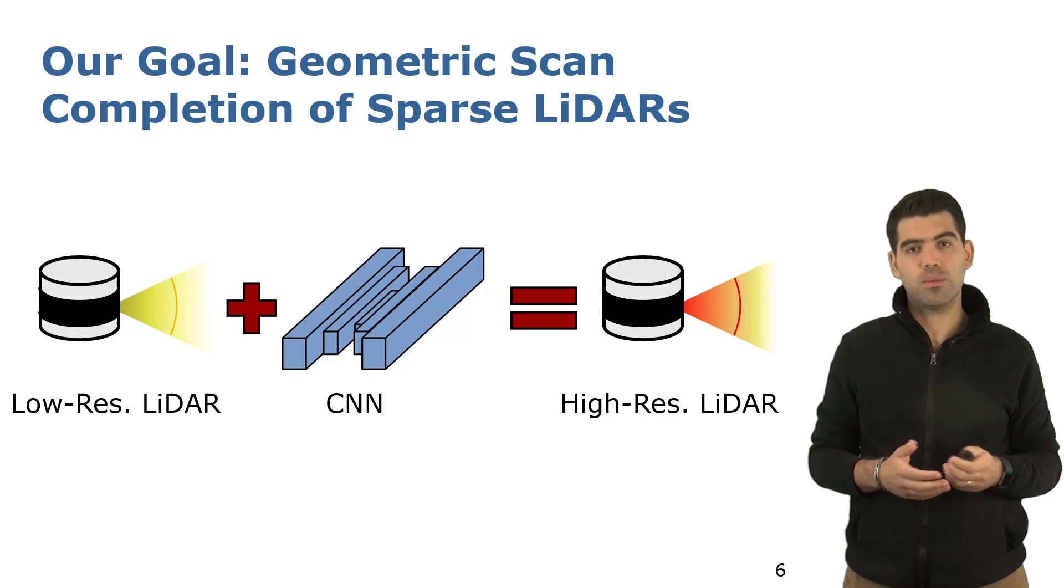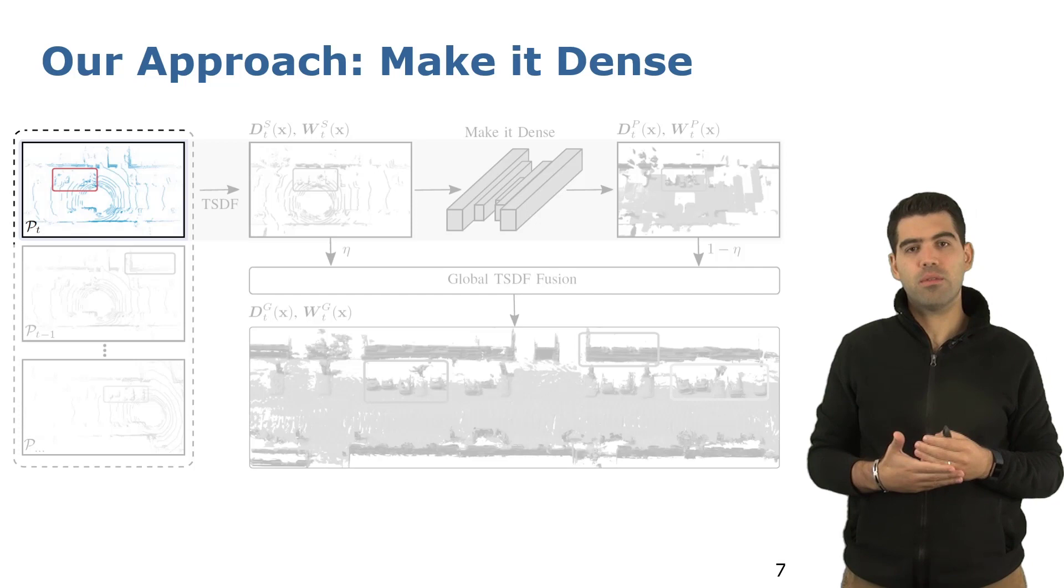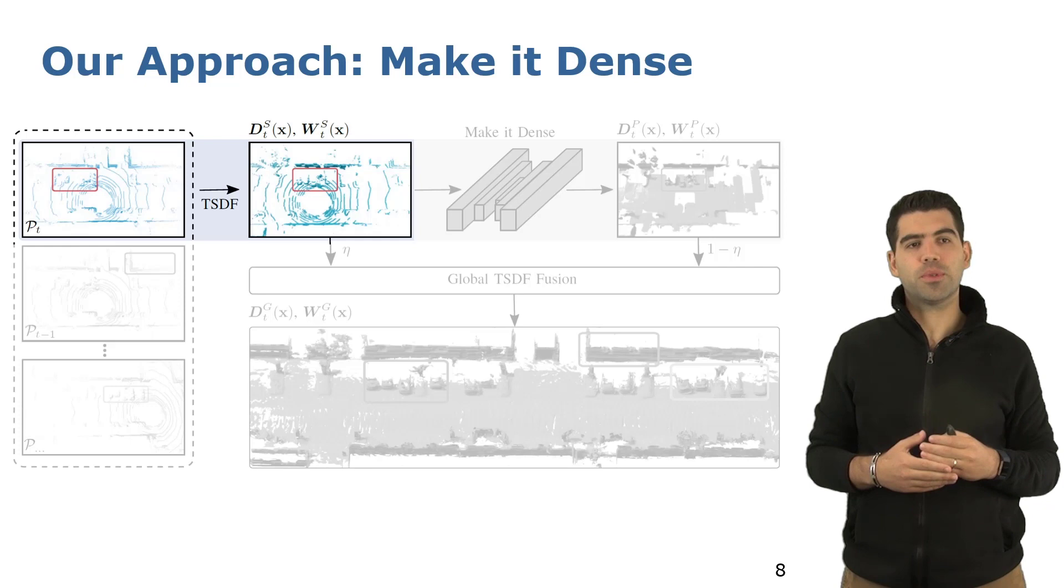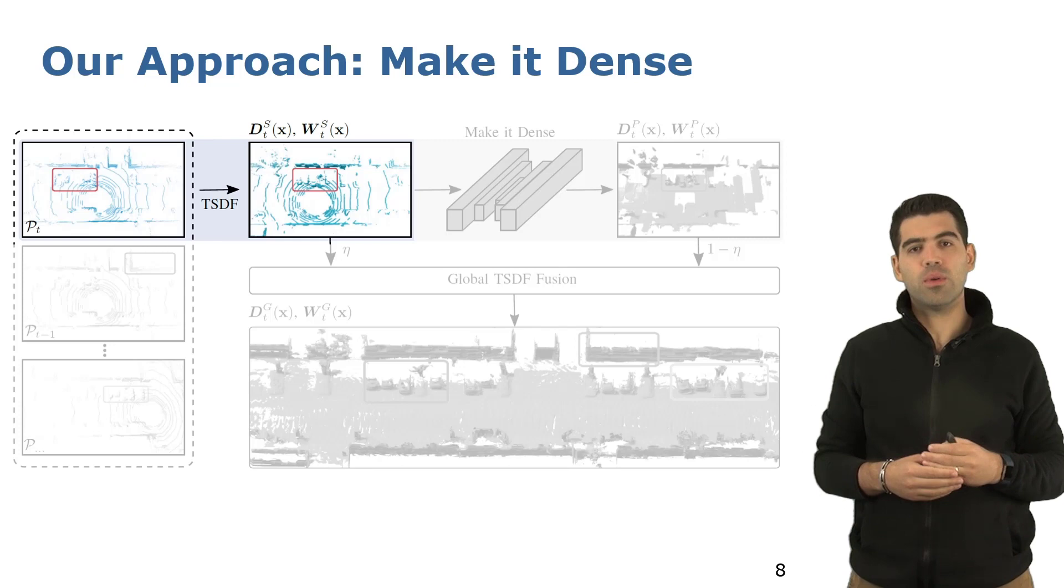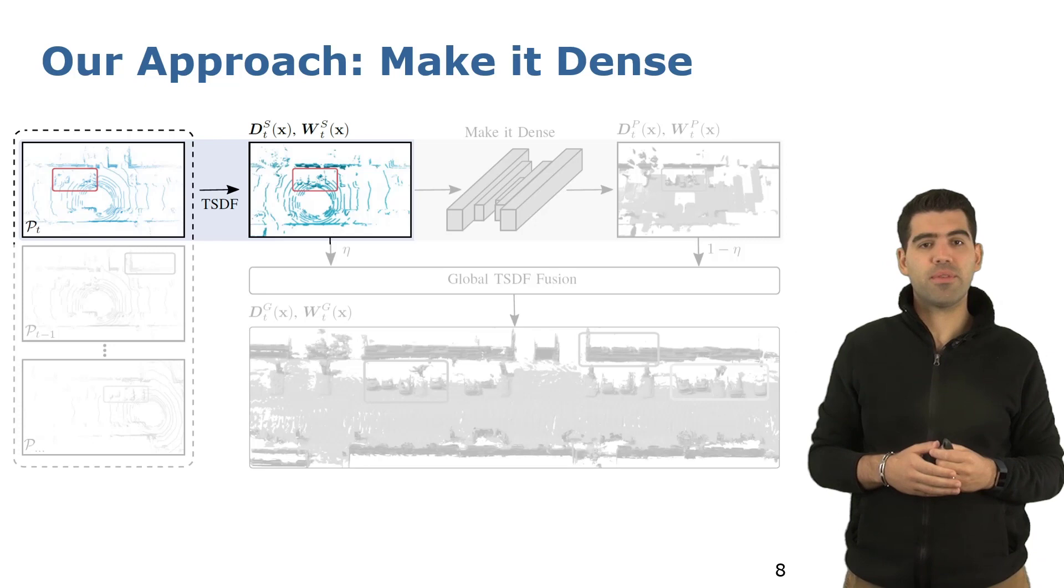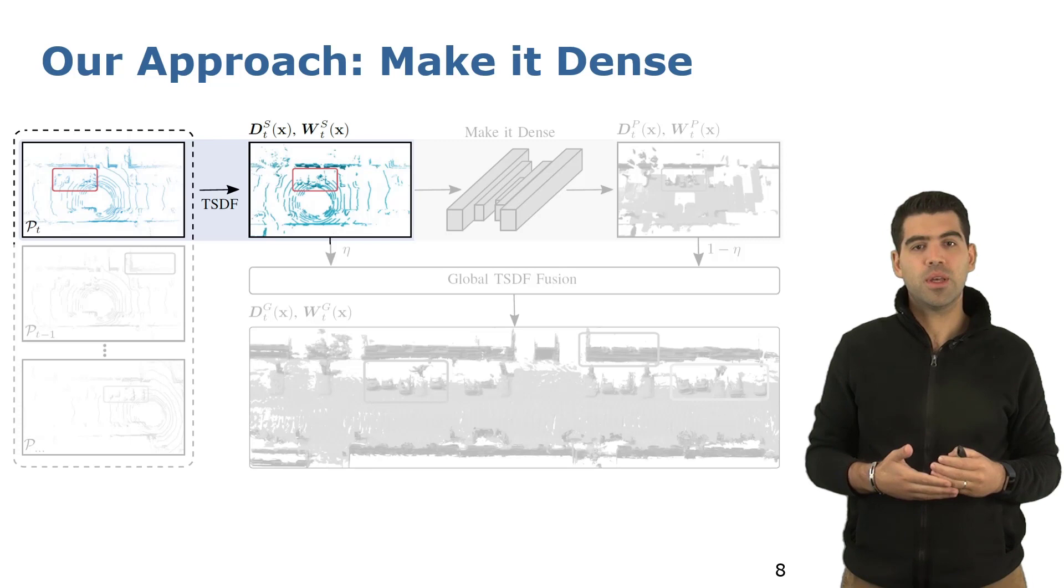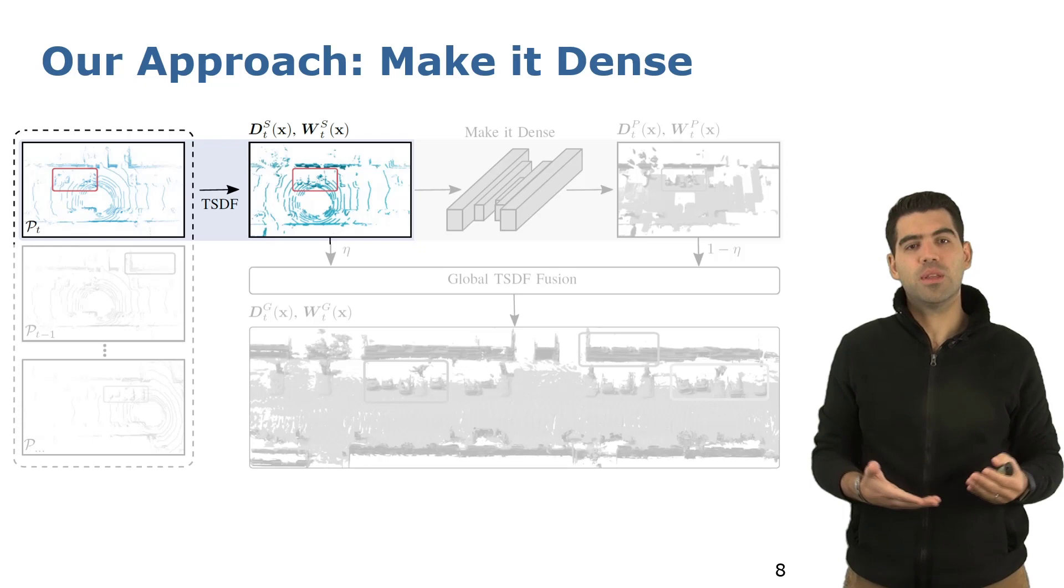To achieve our goal, we sequentially process each scan from a low-resolution LiDAR. First, we compute the TSDF representation of the input scan. This TSDF represents the input point cloud into a truncated signed distance field. As shown here on the picture on the left, the TSDF from a low-resolution LiDAR is rather sparse and will lead to an incomplete representation of the environment when building the final map.